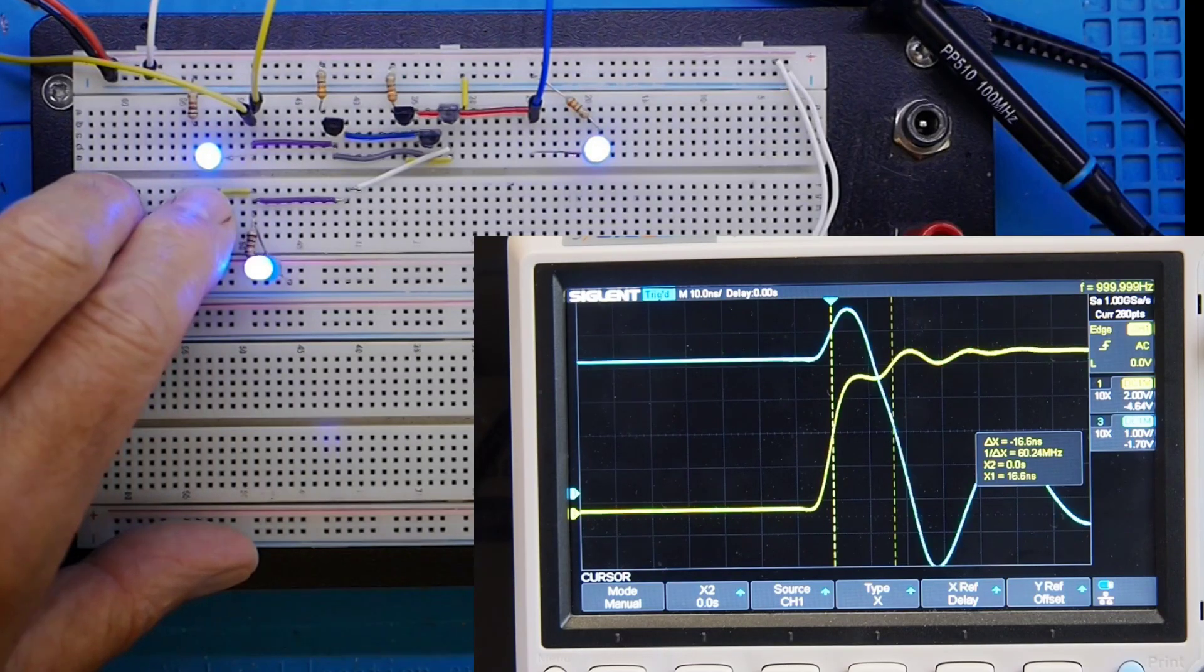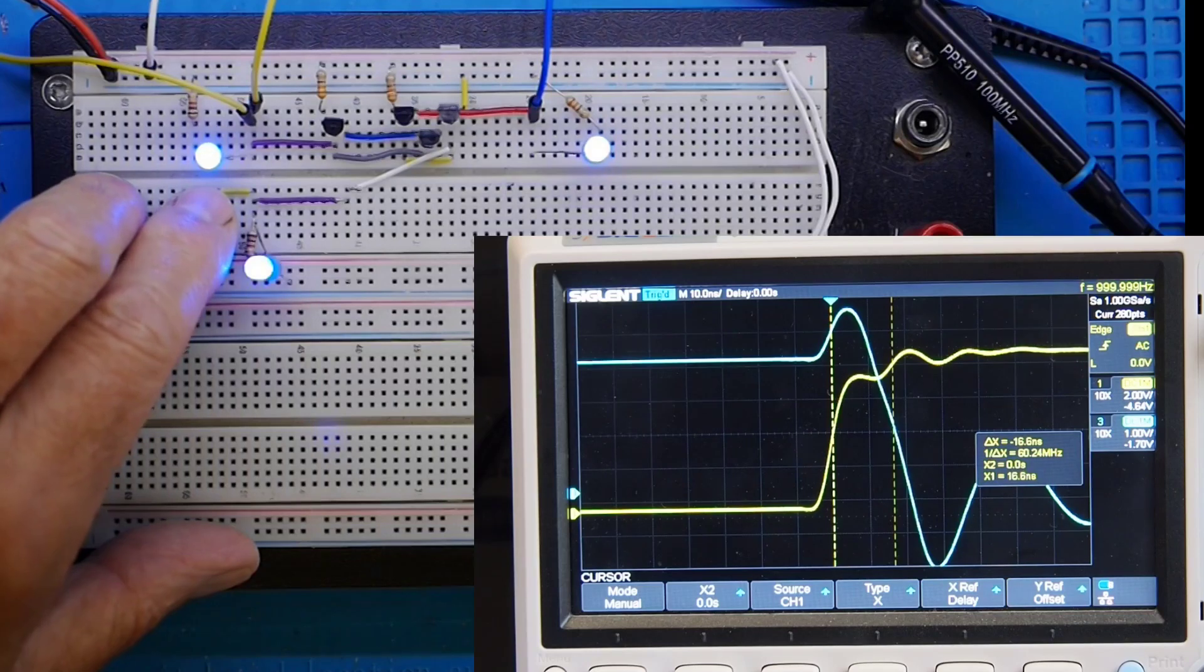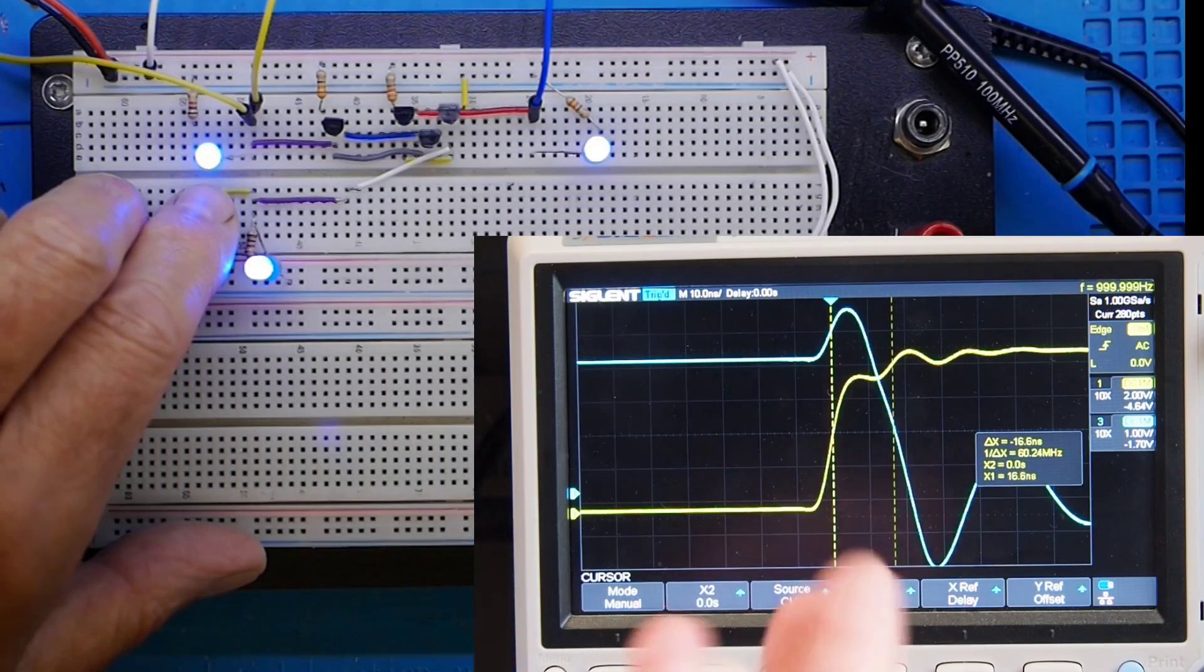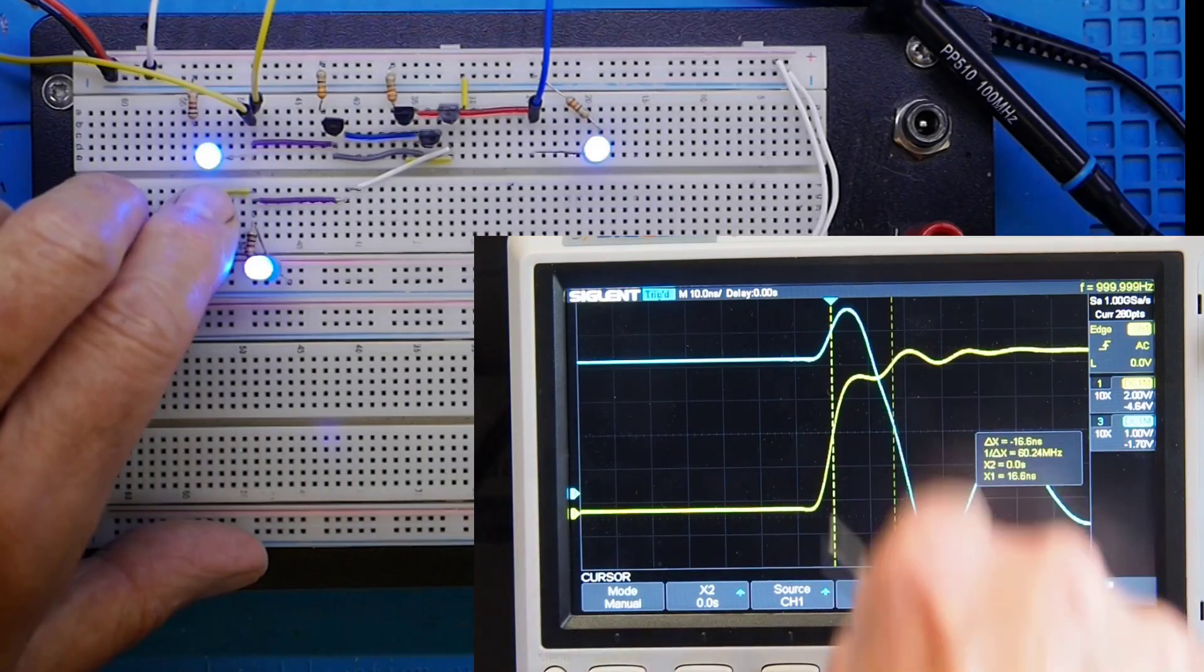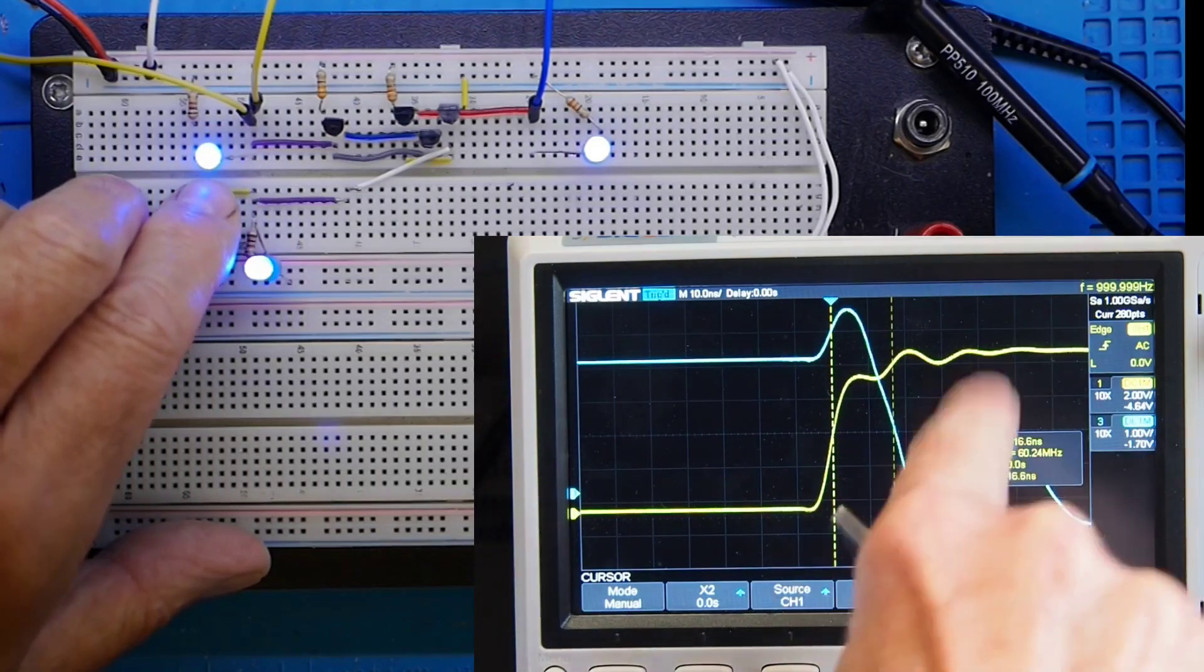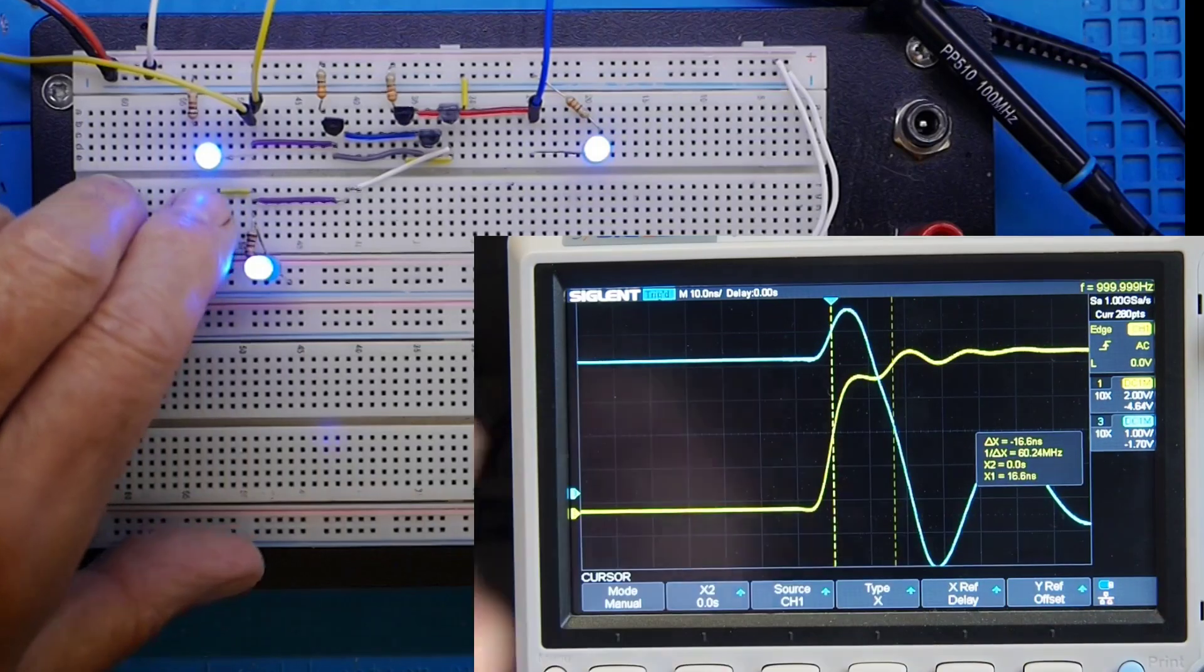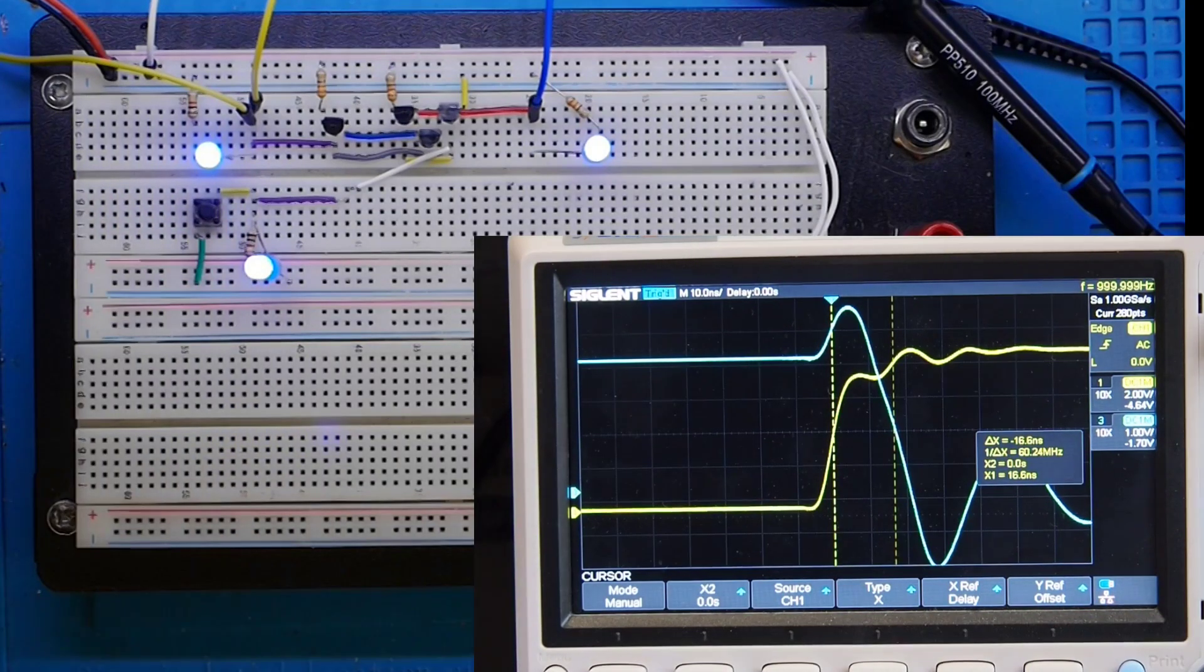Just taking the second input low, you can see that just takes that high there but doesn't really make a great deal of difference to time. I appreciate it's shooting off the top, but you get the general idea. The position of that dip there is still pretty much in the same place. So 16.6 nanoseconds is the delay through the gate.